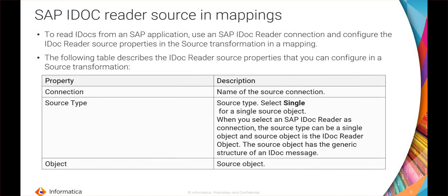Moving on to the IDOC reader source. To read IDOCs from an SAP application we use an IDOC reader connection and configure the IDOC source properties in the source transformation in a mapping. In the connection, we select the name of the source connection we created, and the source type and object will be auto-populated. The source type will be 'single' and the source object will be an IDOC reader object — it is auto-populated and cannot be changed.